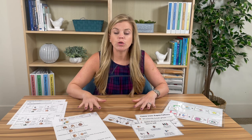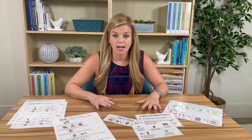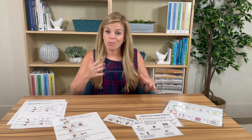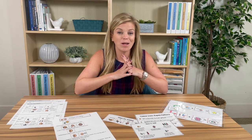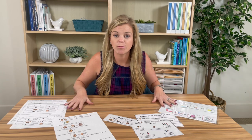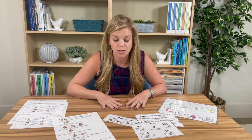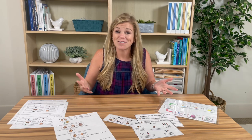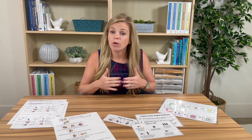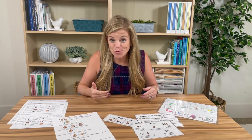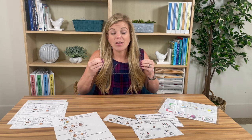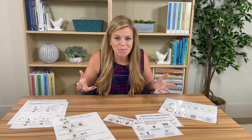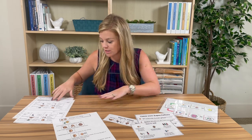Number two: use visuals to clarify classroom rules and expectations. This goes right along with tip one — where we used visuals to communicate routines, here we're communicating our expectations and rules. There are expectations in every classroom and every setting, and we want to make sure our students understand those rules. We need to communicate them in an understandable way, as verbal language alone may be too much.